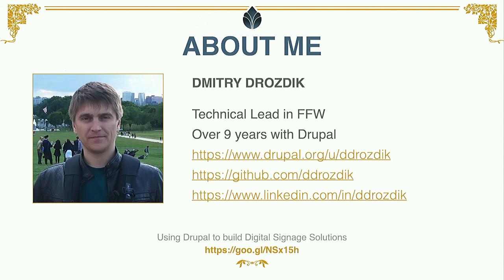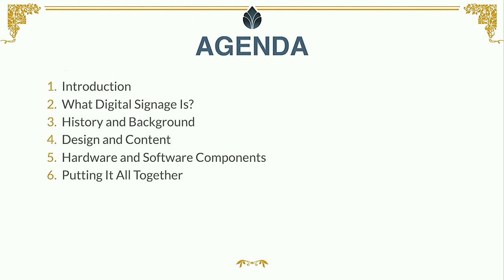Today I'm going to talk about one of the areas of implementation of the Internet of Things. Briefly, our agenda: I will describe what digital signage is and where you can find it. Then I'll give a little bit of information about the history and background of the project, the major goals and objectives, and talk a bit about design and content and where our signs should be displayed. Also, I will talk about hardware and software components we are using or tried to use. And finally, how it all comes together.